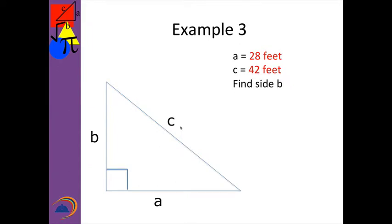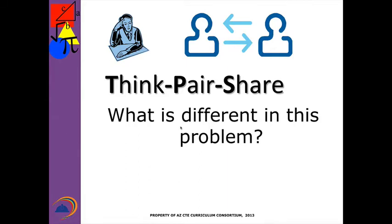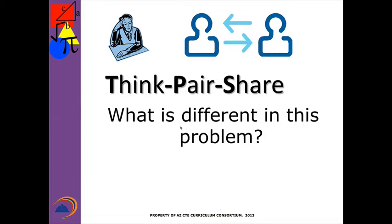Example 3: fill in your note taker that A is going to be 28 feet and C is 42 feet, and we want to find B. What's different in this problem? How is it different than any of the other questions? Teacher, pause the video and have students discuss. Welcome back. This time we're solving for one of the sides instead of the hypotenuse — this time we have C given instead of looking for C.